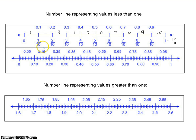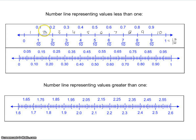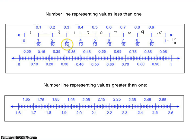Or we could use the fraction: 1 tenth, 2 tenths, 3 tenths, and so on. This is showing us that these have the same value as each other. The decimal 0.1 is the same as the fraction 1 tenth. They're even pronounced the same when you read them out loud. So the decimal 2 tenths equals the fraction 2 tenths.